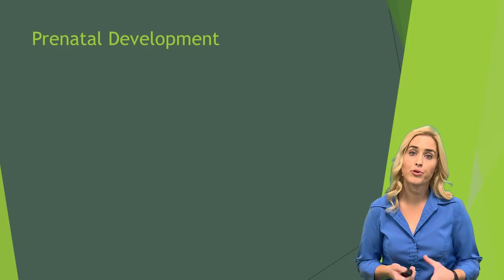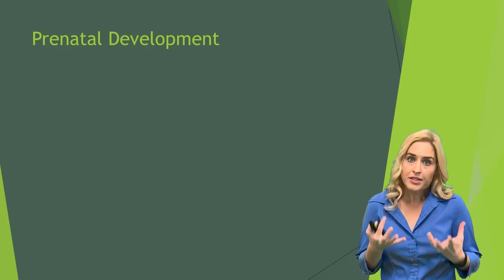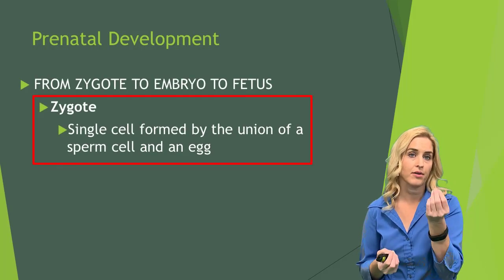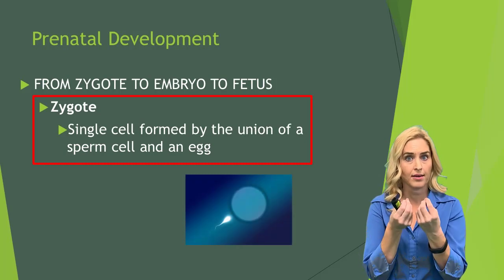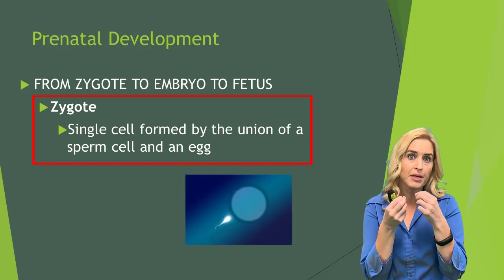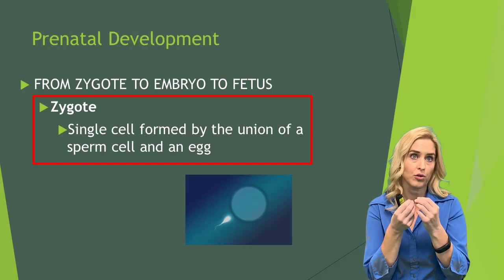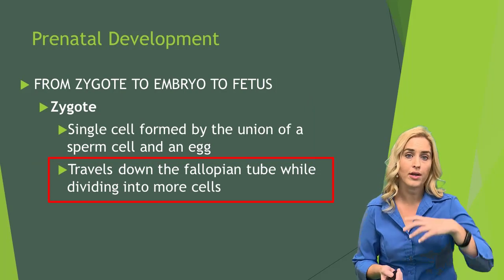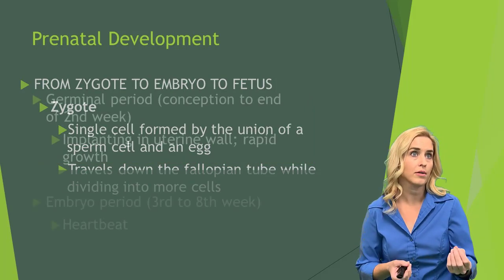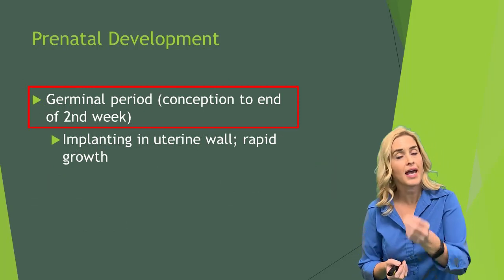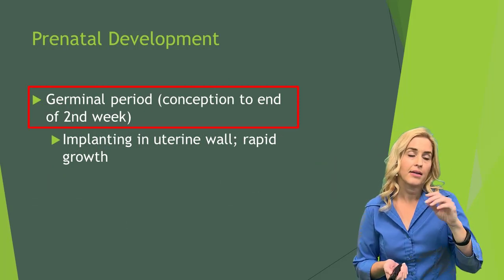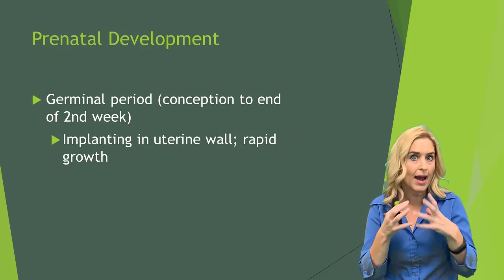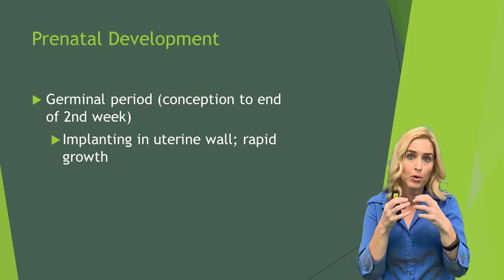Specifically, we're going to be talking about prenatal development. The first stage of prenatal development is the zygote, and this is where the single cell is formed by the union of the sperm and the egg. This union typically happens in the fallopian tube, and this zygote will travel down the fallopian tube into the uterus, where it will attach to the uterine wall. This is the germinal period, from conception to the end of the second week, when the zygote will start to really rapidly change, develop, grow, and multiply.